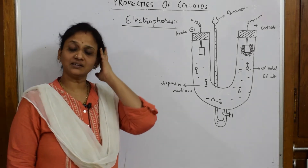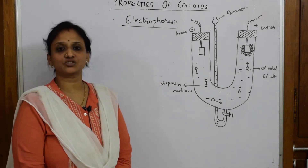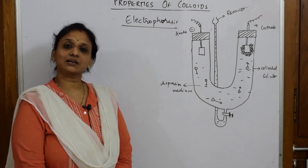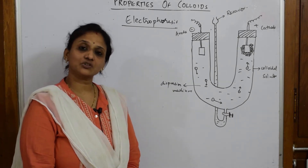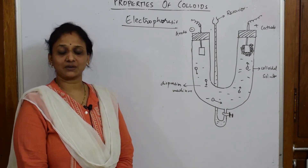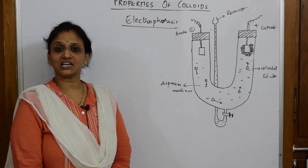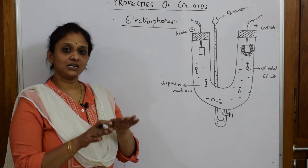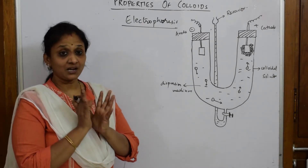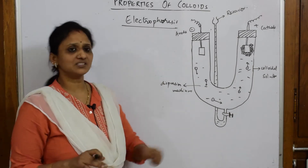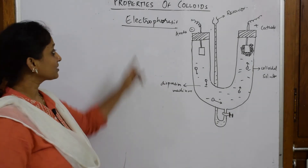Let's come back and learn. We have already learned the concept of electrophoresis, the concept of charge on colloidal particles, and how colloidal particles attain charge. We've seen positively charged and negatively charged colloidal particles, then gradually moved to the concept of the electrical double layer — Helmholtz's double layer — where charge exists between the fixed layer and the diffused layer. Now we come to one more concept under charge of colloidal particles: electrophoresis.